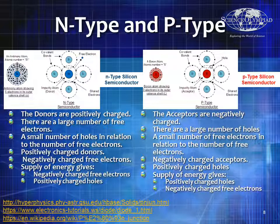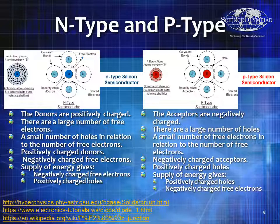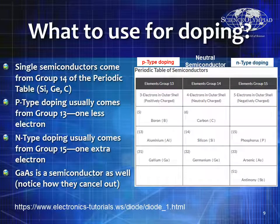Donors are going to be positive charges for the N-type semiconductor — there are a large number of free electrons and a very small number of holes. So you have positively charged donors and negatively charged free electrons. The supply of energy gives these atoms free electrons and positively charged holes. For a P-type semiconductor, the acceptors are negatively charged — there's a large number of holes and a small number of free electrons. So there are negatively charged acceptors and positively charged holes.